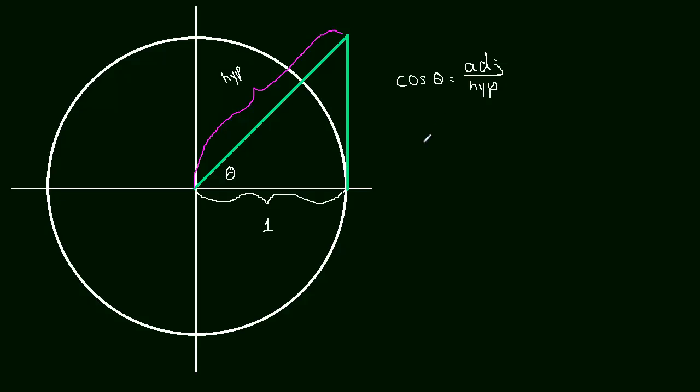And the adjacent side is just equal to 1, right? The adjacent side is equal to 1 because that's the length of the adjacent side. I mean, it's the unit circle. So the cosine of theta equals 1 over the hypotenuse.